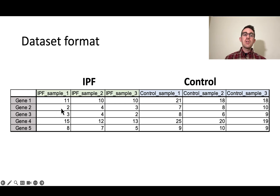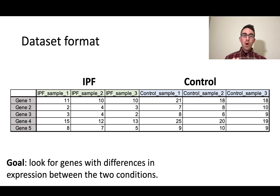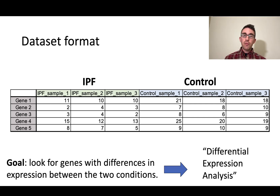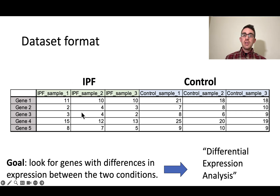This is a measure of what we call gene expression — telling us how much each gene was expressed in each sample. A higher number means higher expression and more mRNA content; a lower number means lower expression and less mRNA content. The goal of our first project is to look for genes with differences in expression between the two conditions. This is called differential expression analysis — we're looking for genes that are differentially expressed between the two conditions.